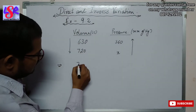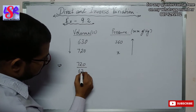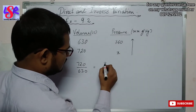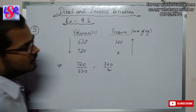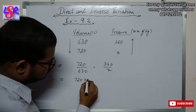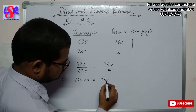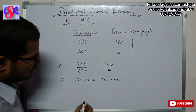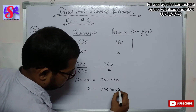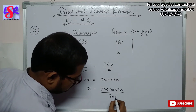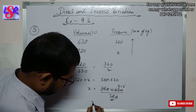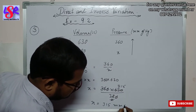This can be written as 720 upon 630, putting the numerator which is pointing towards the head of the arrow, and this equals 360 upon x. Now solving for x using cross multiplication: 720 × x = 360 × 630 upon 720. The zeros cancel out, 36 divides twice, and this becomes 315. So x equals 315 mm of Hg.